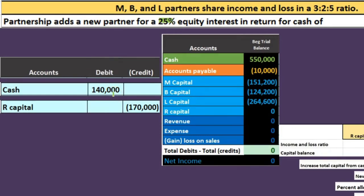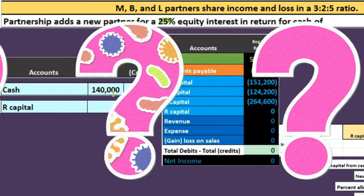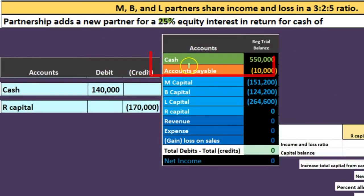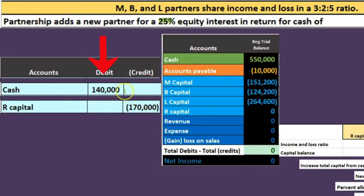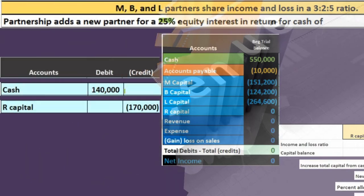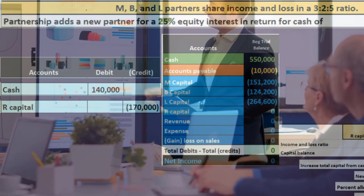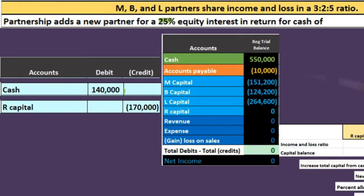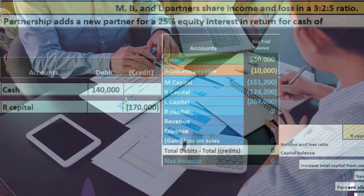You might wonder why the existing partners would agree to this — why allow R a $170,000 interest for only $140,000? The reason is that R may be bringing intangible assets or name recognition that will generate future revenues not reflected in the current book value calculation. To get R on board, the existing partners are willing to give up a $170,000 interest even though they're only receiving $140,000 in cash.